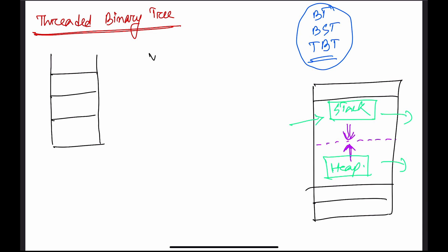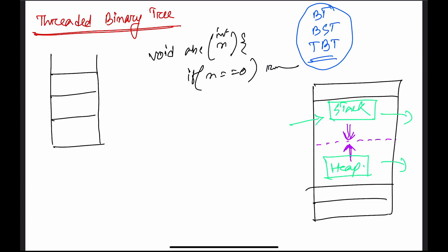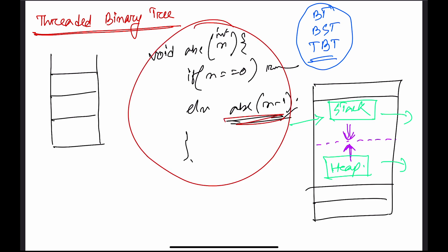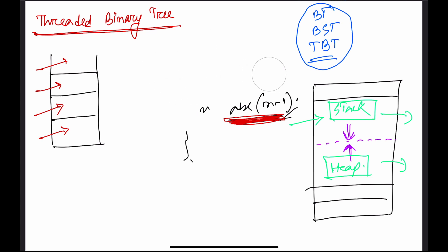For example, a recursive function void ABC(int n): if n equals 0, return; else call ABC(n-1). So dynamically, this function is called, and in the dynamic stack there would be ABC(n), ABC(n-1), ABC(n-2), ABC(n-3), all the way down to ABC(0). It needs a dynamic stack to store all those function calls.